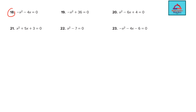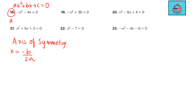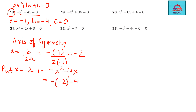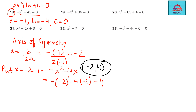Let's do question 18. We follow the same method. First find the axis of symmetry using x = -b/2a. Comparing with ax² + bx + c = 0: a = -1, b = -4, c = 0. So x = -(-4) / (2×(-1)) = 4/(-2) = -2. Substituting x = -2 into -x² - 4x gives y = 4. So the vertex is at (-2, 4).